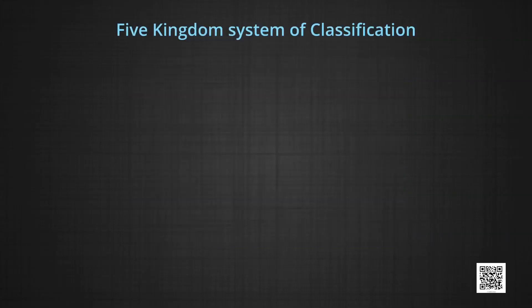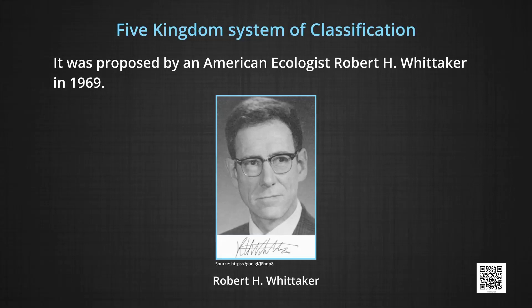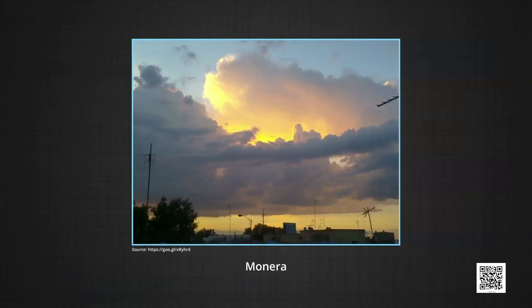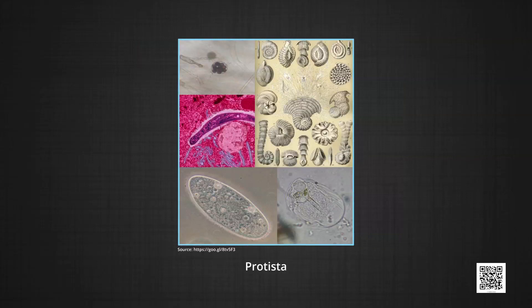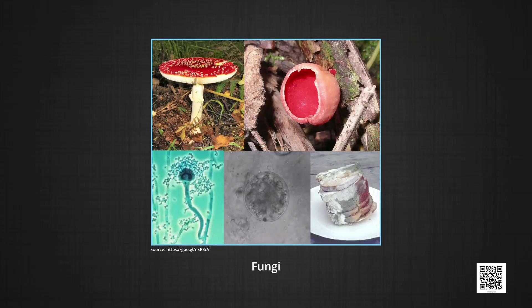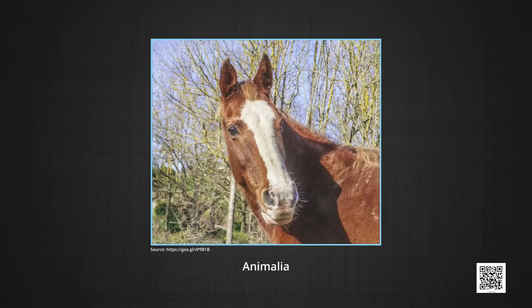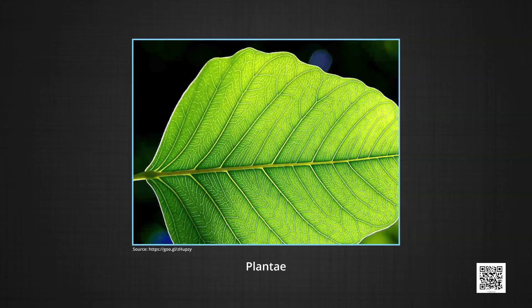Five kingdom system of classification was proposed by an American ecologist Robert H. Whittaker in 1969. Whittaker divided the living world into five kingdoms: Monera, Protista, Fungi, Animalia and Plantae.